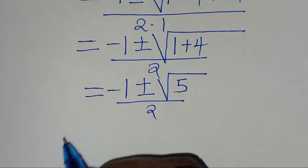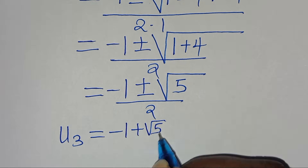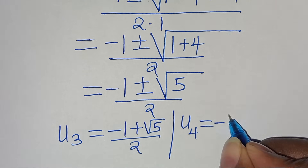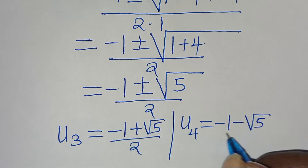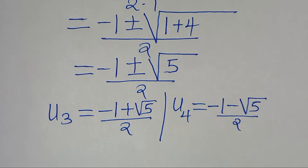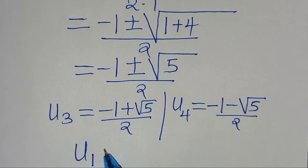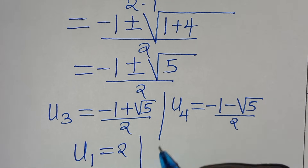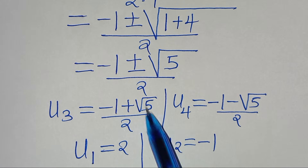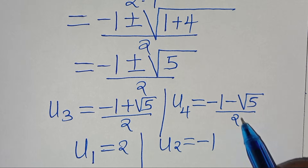So u₃ is equal to (minus 1 plus square root of 5) divided by 2, and u₄ is equal to (minus 1 minus square root of 5) divided by 2. So in summary, u₁ equals 2, u₂ equals minus 1, u₃ equals (minus 1 plus √5) over 2, and u₄ equals (minus 1 minus √5) over 2.